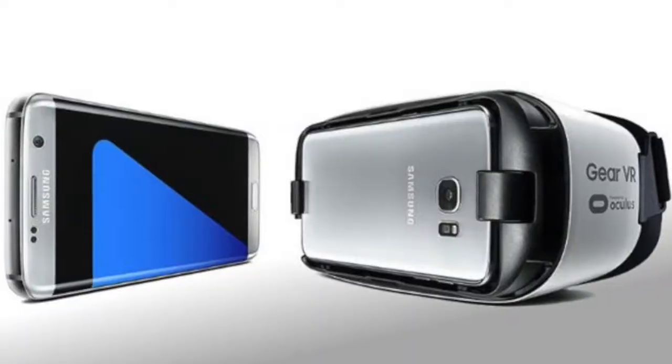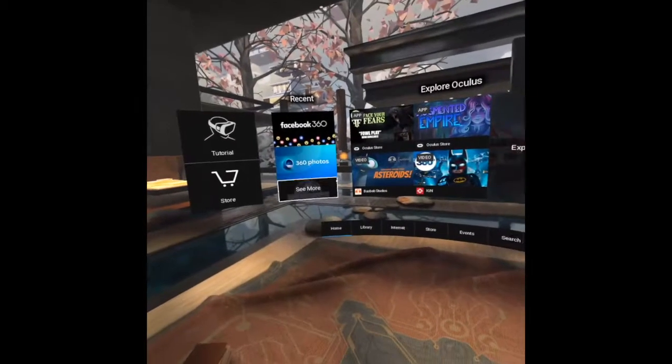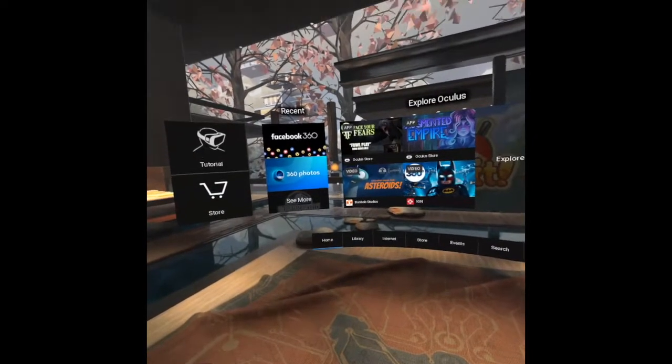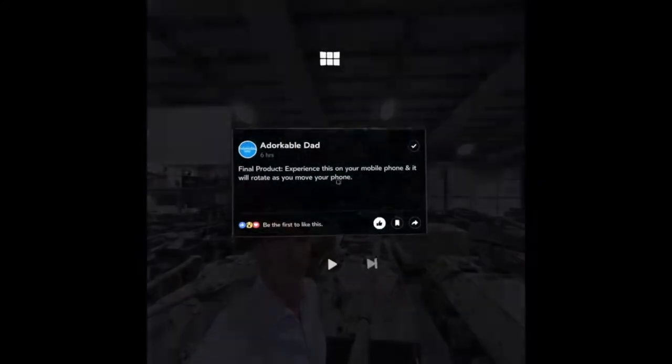Now if you have an Android phone, you can drop this into a Gear VR headset and open the Facebook 360 app and it will automatically load. You just simply select it and you can look around and experience your VR scene.